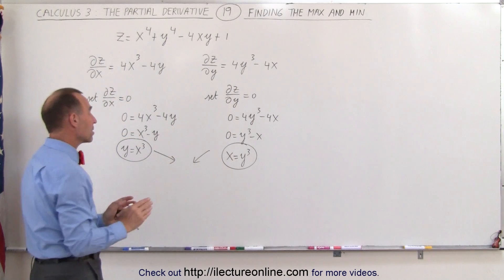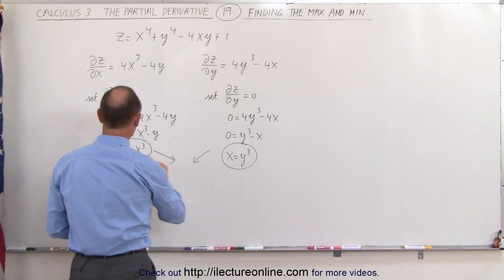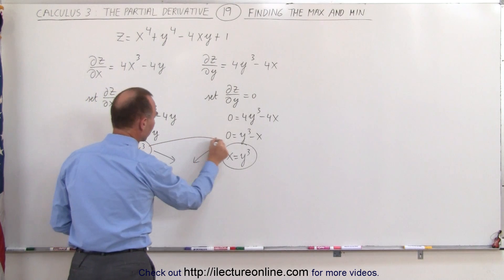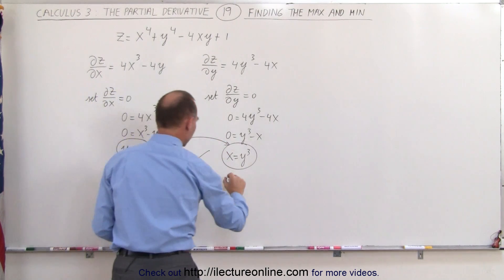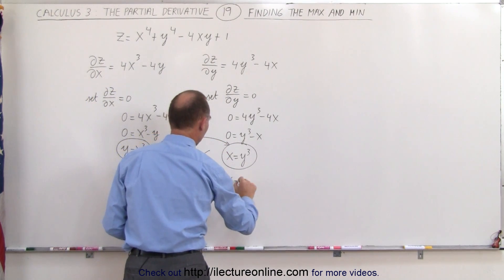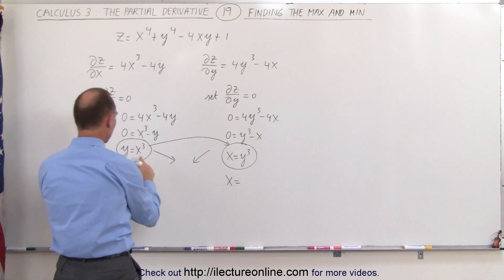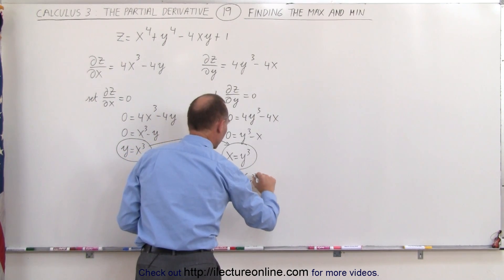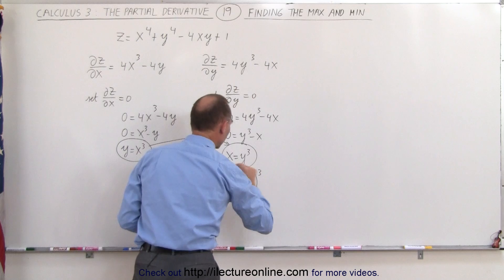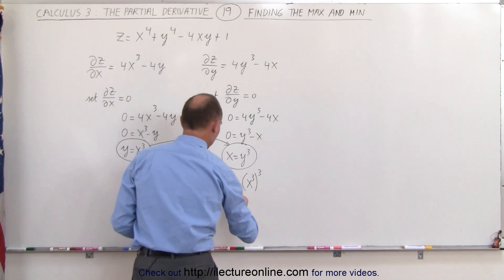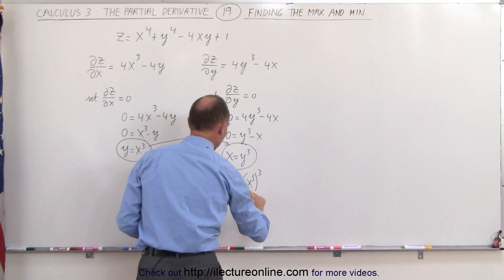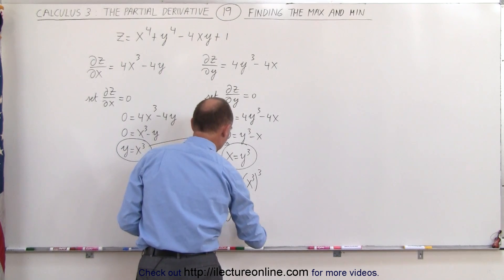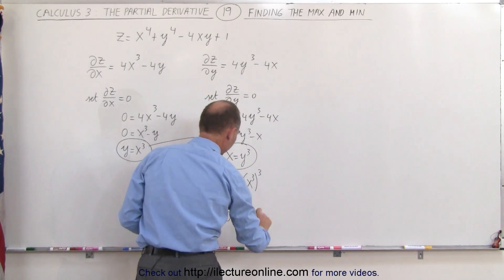We're going to let y equal x cubed and plug that into the equation x equals y cubed. Since y equals x cubed, we can say x equals x cubed cubed, which means x equals x to the 9th, or 0 equals x to the 9th minus x.